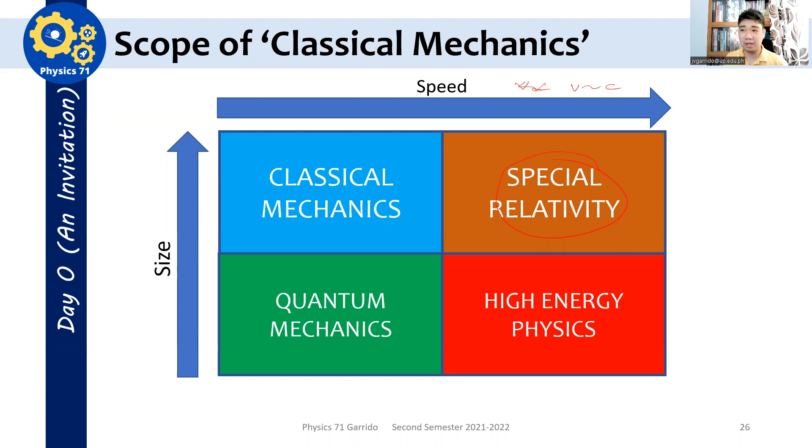If the speed v is proportional to the speed of light, hindi na classical mechanics yan. In a different context, classical pa rin siya, pero relativistic na siya. Special relativity. So if the speed of a particle is approximately the speed of light, or comparable to the speed of light, we are beyond the scope na ng classical mechanics. Further, kung ang objects mo naman ay ordinary objects, nasa rim pa rin yan ng classical mechanics. But if you're talking of the motion of particles like atoms and molecules, yung mga maliliit na subatomic particles, hindi na rin yan pasok sa classical mechanics. That's now part of quantum mechanics.